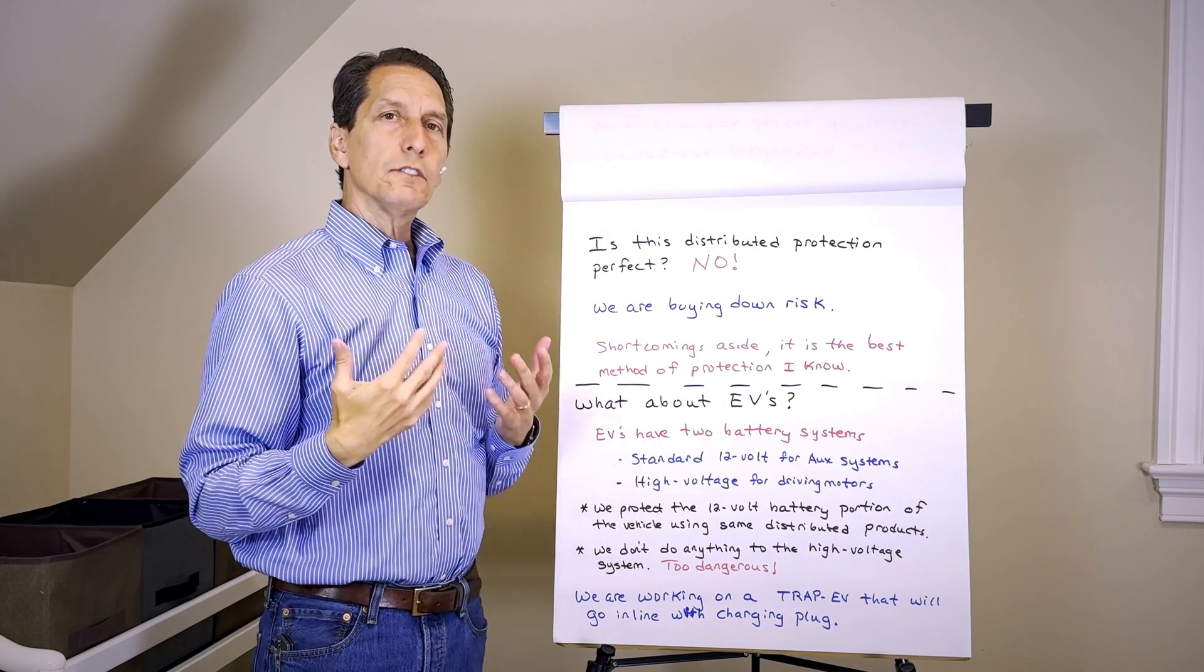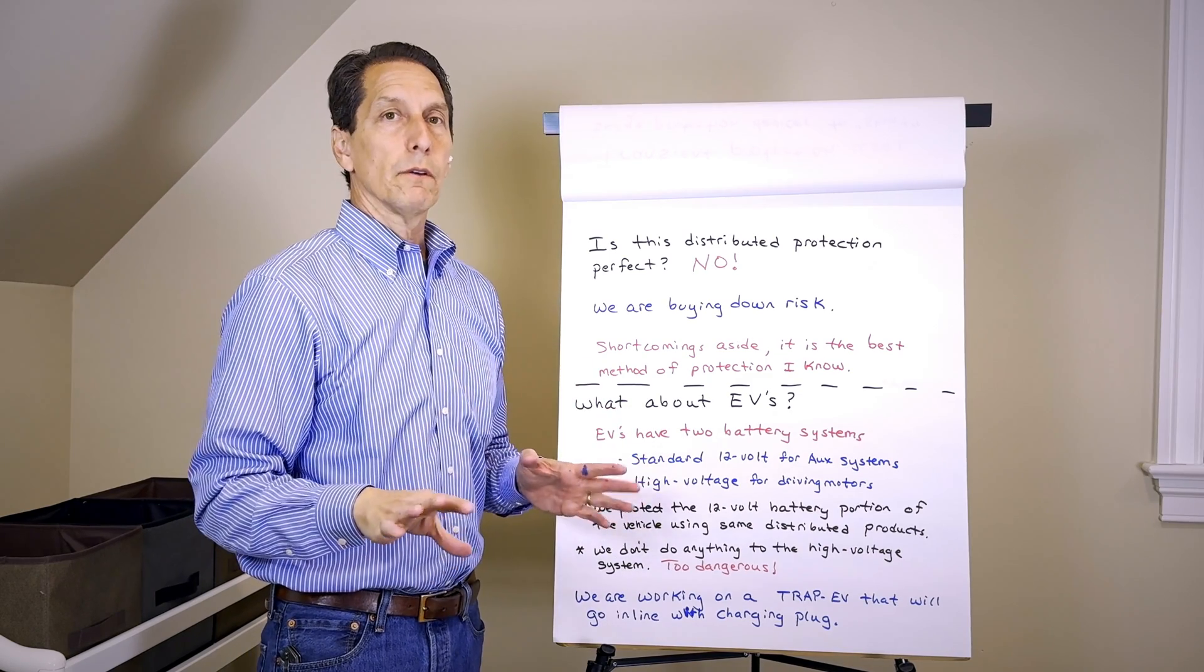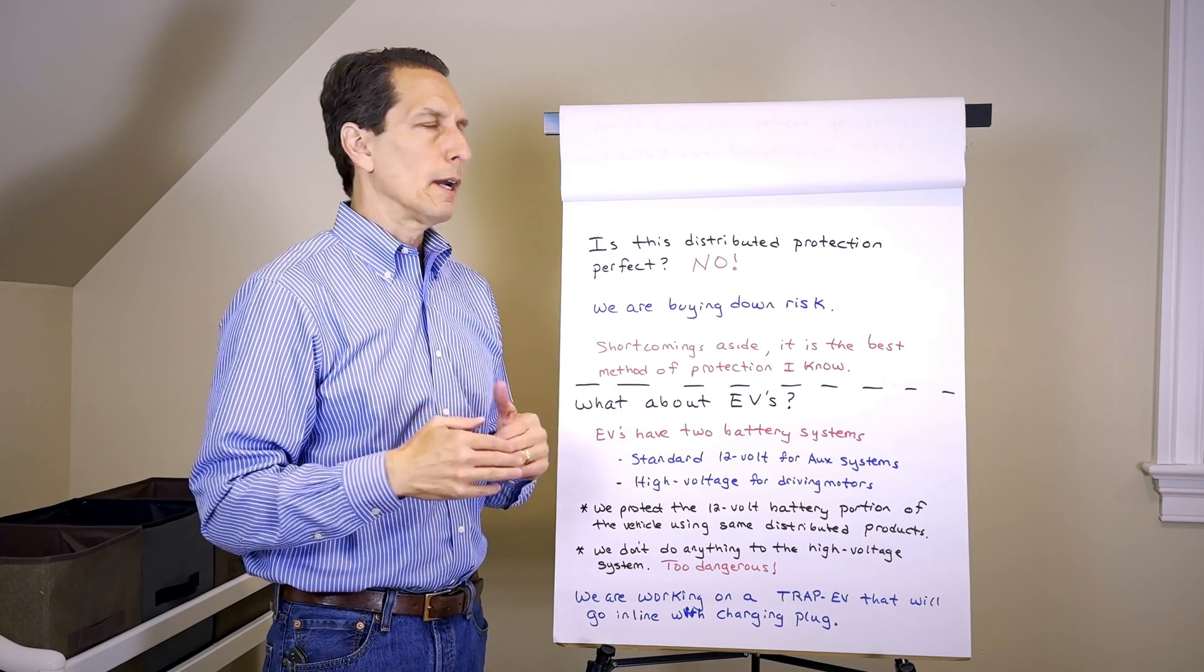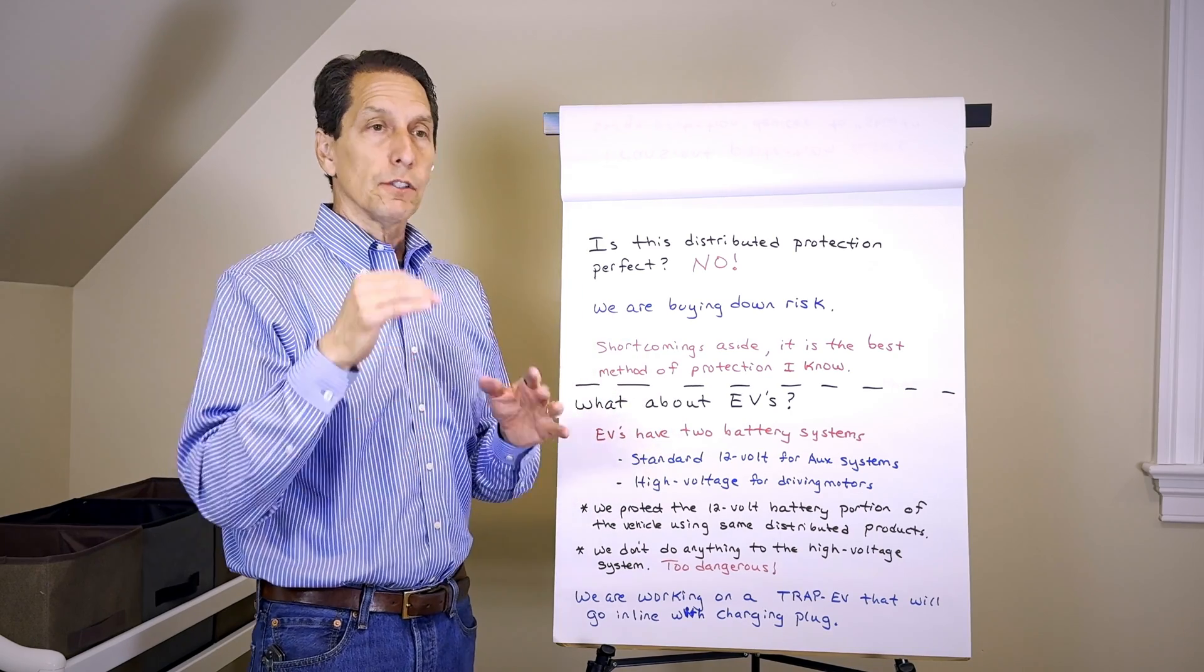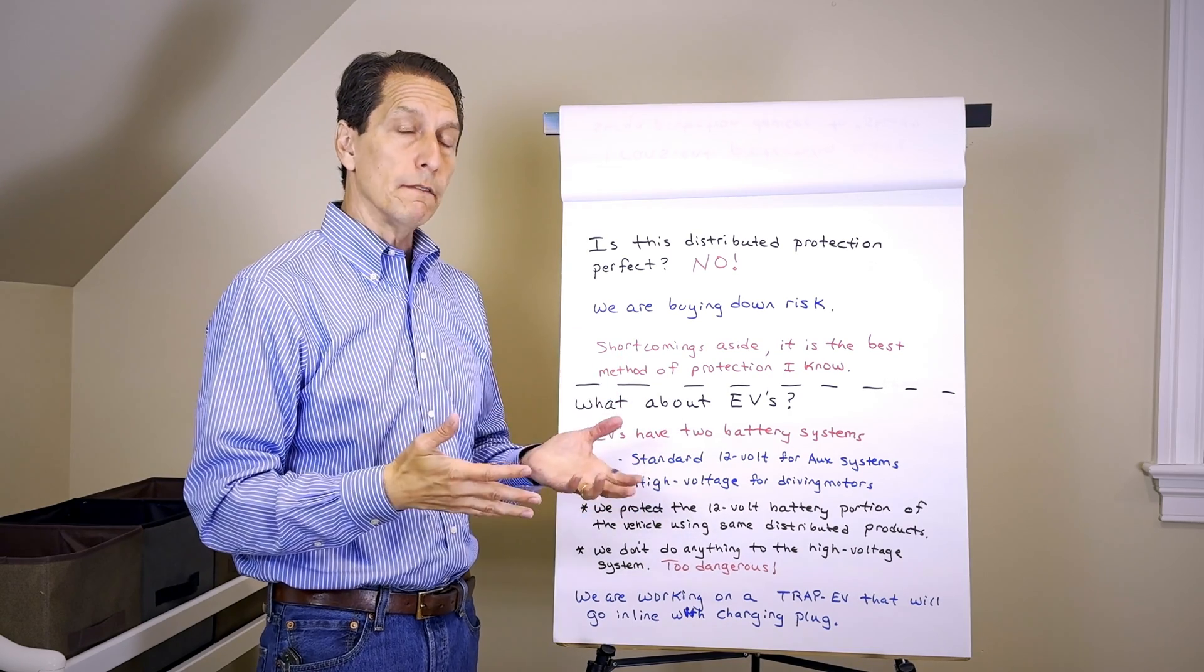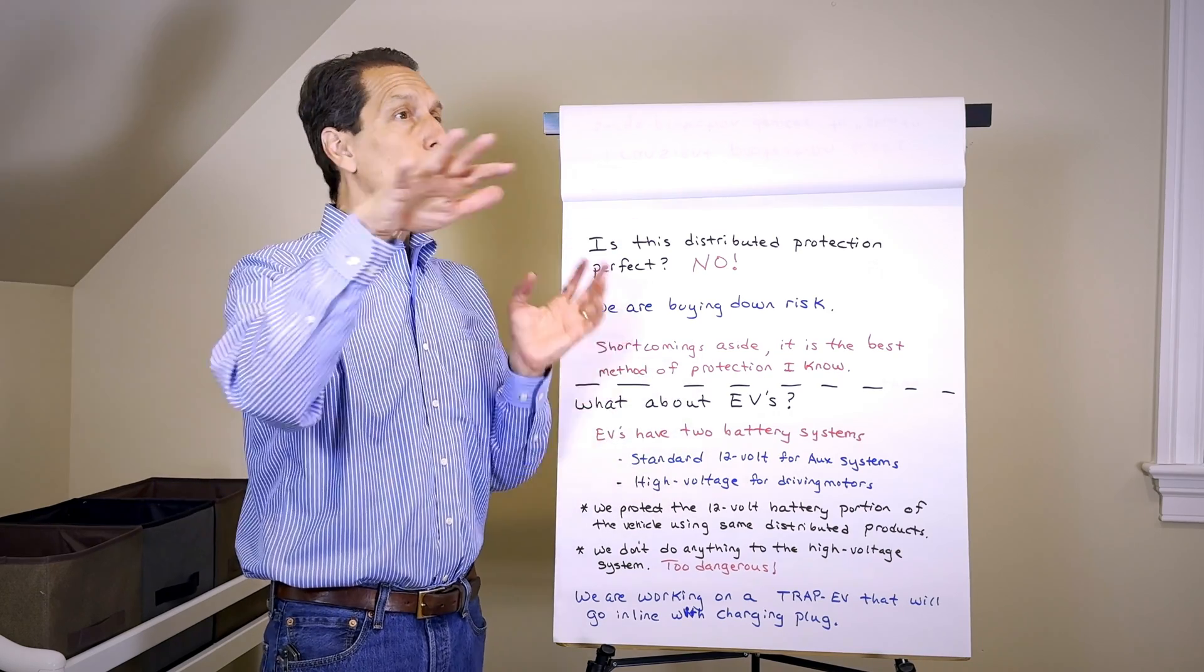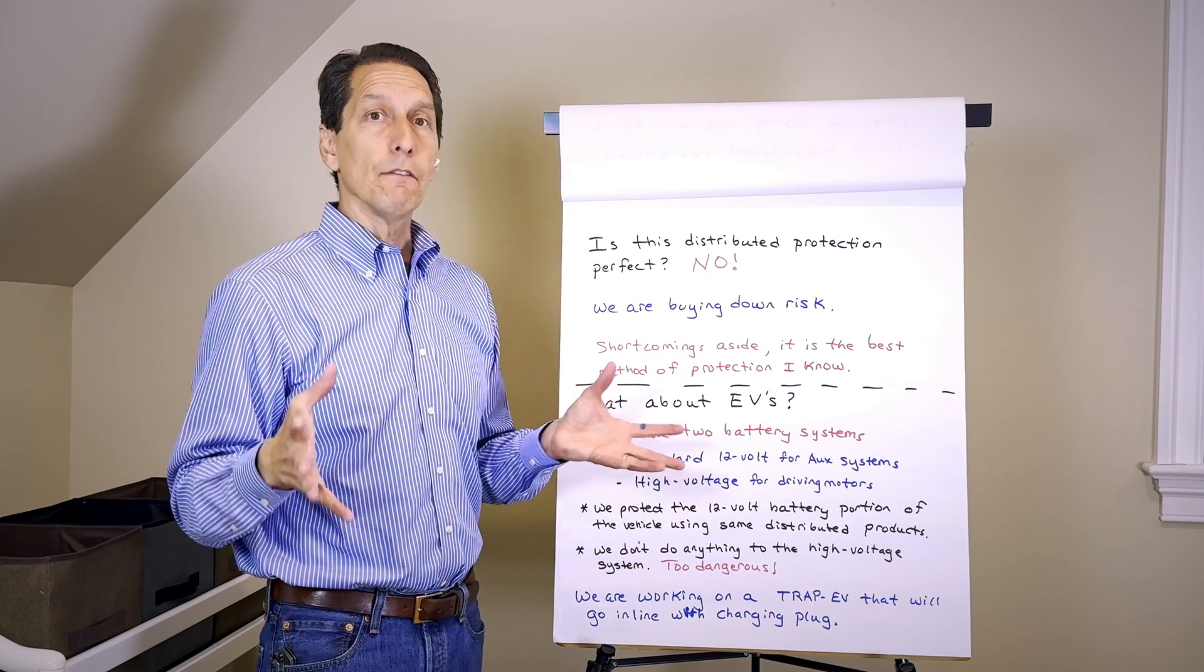Is this distributed protection method perfect? The answer is absolutely no. Anything with EMP protection is pretty much about buying down risk. By adding in these protective devices, you're certainly buying down your risk. You're draining away unwanted energy in your system, so you're going to prevent those voltages from coming up the way they would have if you didn't have them. Is there a guarantee that the voltage somewhere in this very complex system won't get too high and cause damage? No, there's no guarantee because you can't get everywhere.